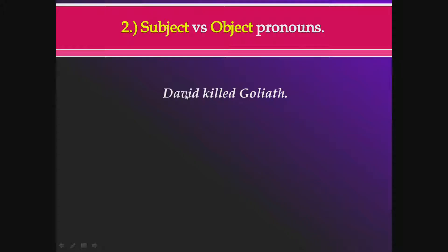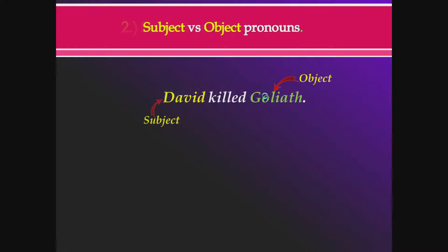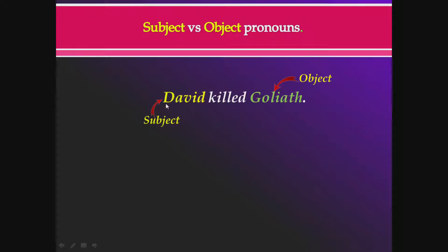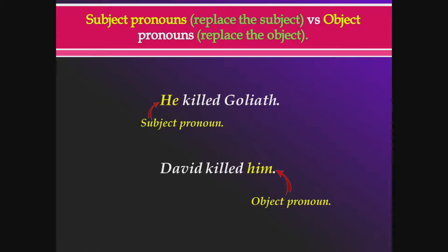To understand subject versus object pronouns, we need to know the difference between subject and object. In Arabic terms, subject is like the 'fa'il' and object is like the 'maf'ul bih.' For example: 'David called Goliath' — David is the subject (the doer) and Goliath is the object (the one acted upon). If you replace the subject with a pronoun, it's called a subject pronoun; if you replace the object, it's called an object pronoun.